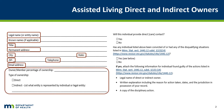For each individual listed, you must indicate whether they are a direct or indirect owner. For indirect owners, indicate what entity is represented by the individual or legal entity and whether they will have any direct contact with residents.